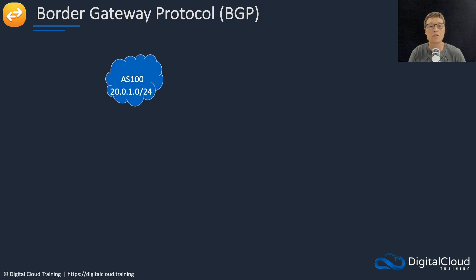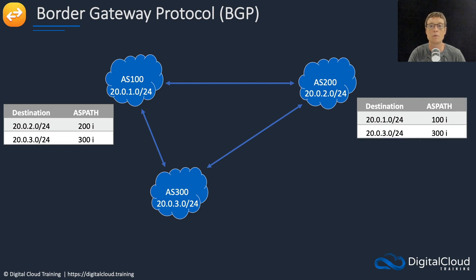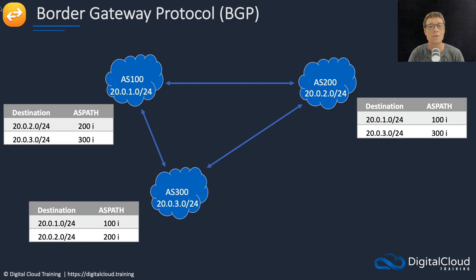Let's learn about BGP visually. Here we have an autonomous system with ASN 100 and its own CIDR block. We also have AS 200 and AS 300, with peering relationships between them — all three are peered with each other. Looking at the routing tables, we can see that to get to the 100.2 network, AS 200 goes directly to AS 200 and it's there. The 'I' essentially indicates the destination has been reached. For 200.3, we can also directly access that autonomous system.